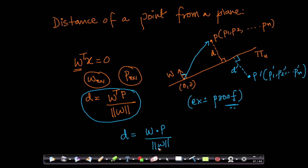If W is a unit vector — meaning the length of W equals one — we can discard the denominator because it is always one. So what does the dot product mean geometrically? If you have an angle between W and P which is less than 90 degrees, then W dot P will be positive. Since W and P are on the same side of your plane, W dot P will be positive.